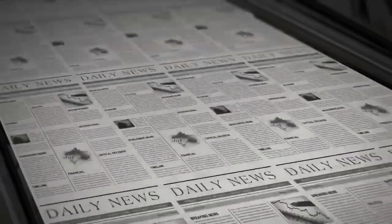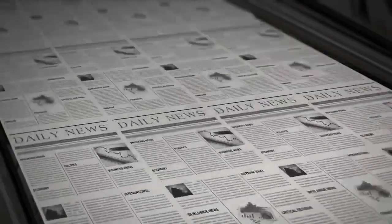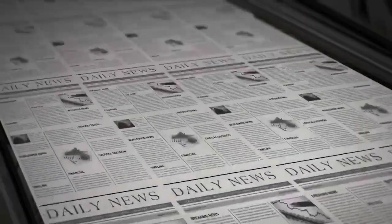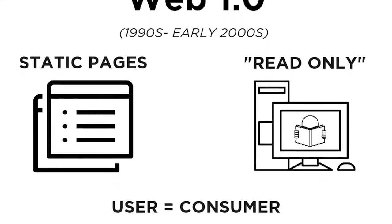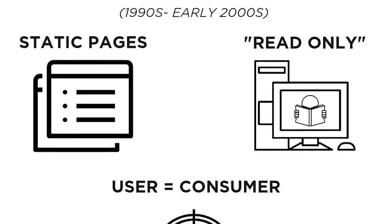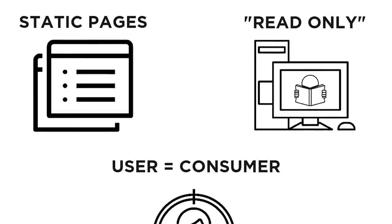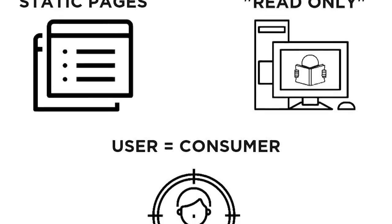The information you would normally find in a newspaper or in a library was now available online, but there wasn't much you could actually do with it. The pages were static, read-only versions, where users could simply consume the information.